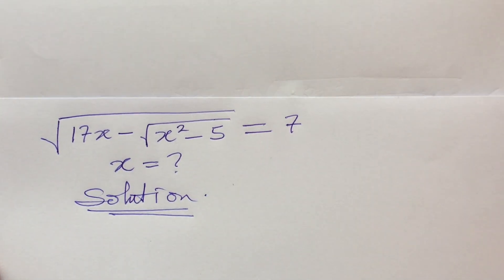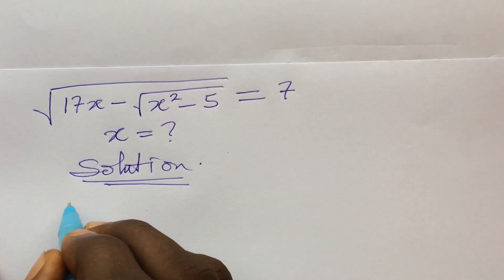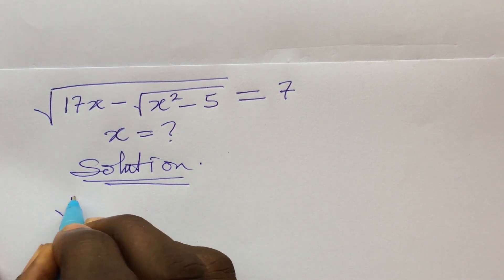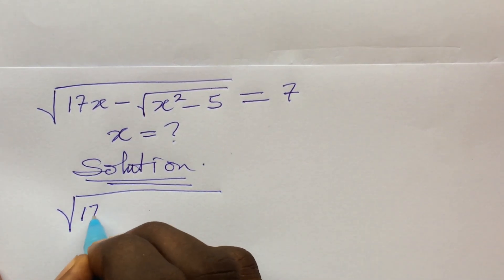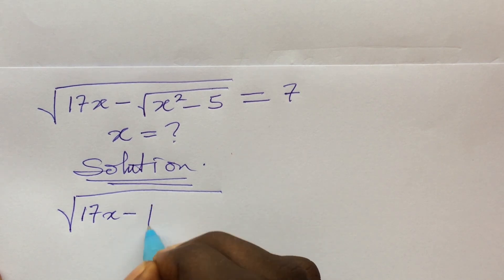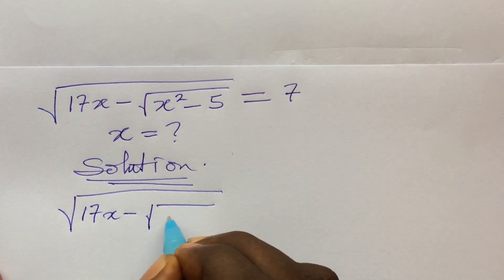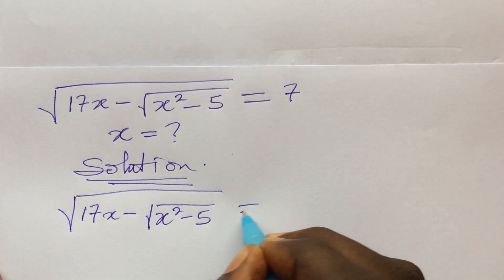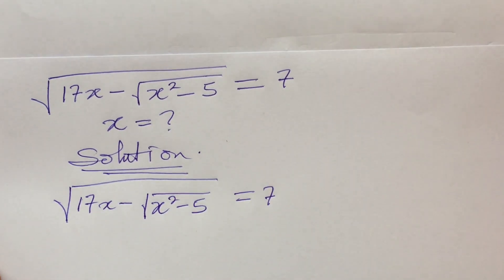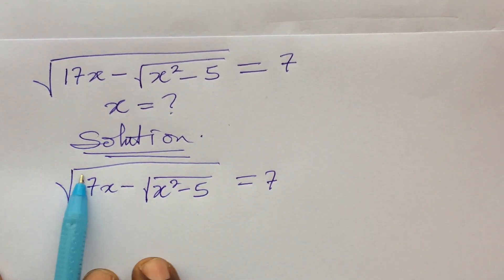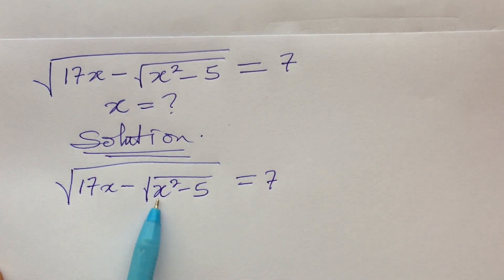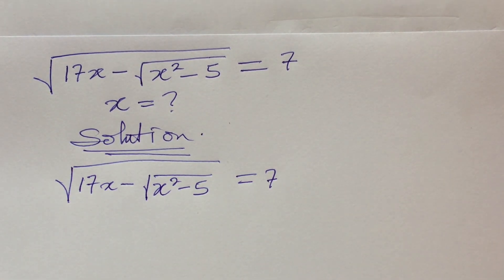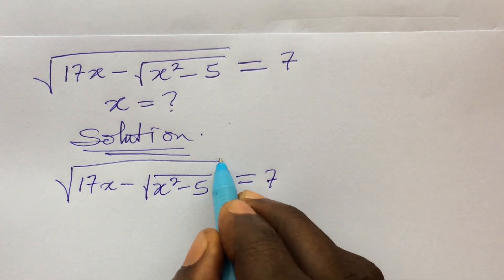We put down our question: the square root of 17x minus the square root of x squared minus 5, equal to 7. You'll discover that we're having a bigger square root and another one inside. So how do we handle these radicals? The number one thing we do is to take the square of both sides in order to eliminate the first radical.